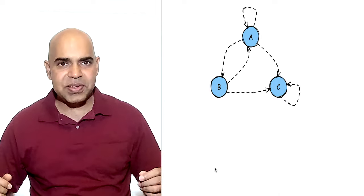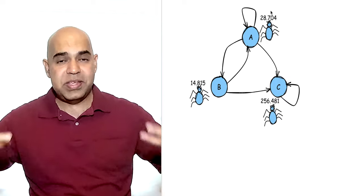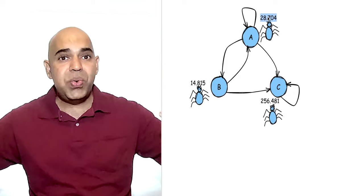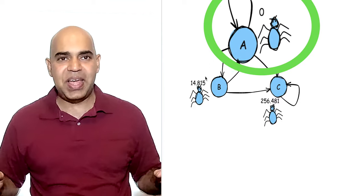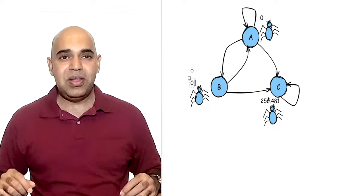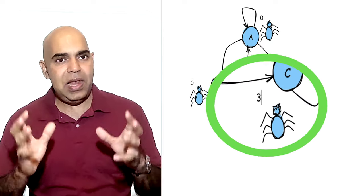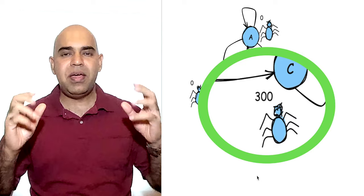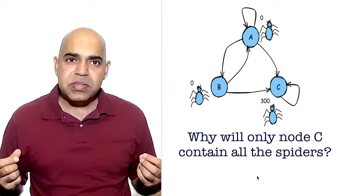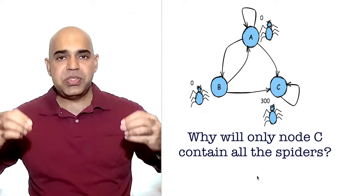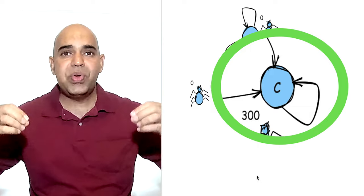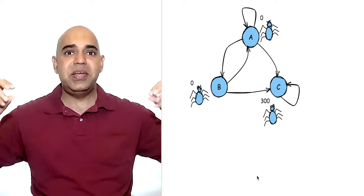Let me give you the answer. After many many many jumps of the spiders using random outbound links, node A will contain no spiders at all. Also, node B will contain no spiders at all. Node C alone will contain all the 300 spiders. Why will only node C contain all the spiders? That will happen because node C links to itself and it does not have any outgoing links taking the spiders to other nodes.